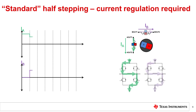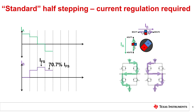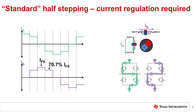Standard half-stepping regulates the winding current at 70.7% during the intermediate steps to provide more consistent torque and smoother motion. The animation shows how the currents flow through the H-bridge and how this configuration can drive the stepper in continuous motion.